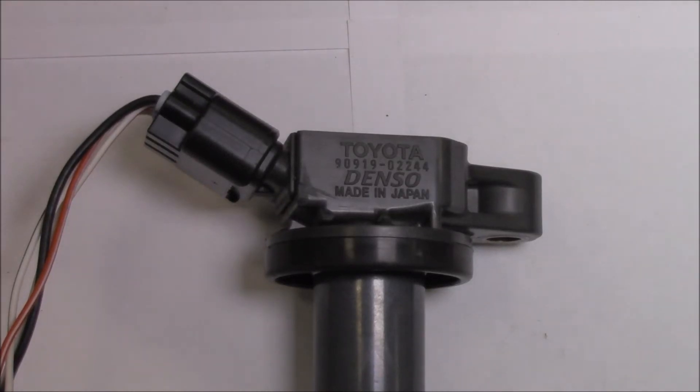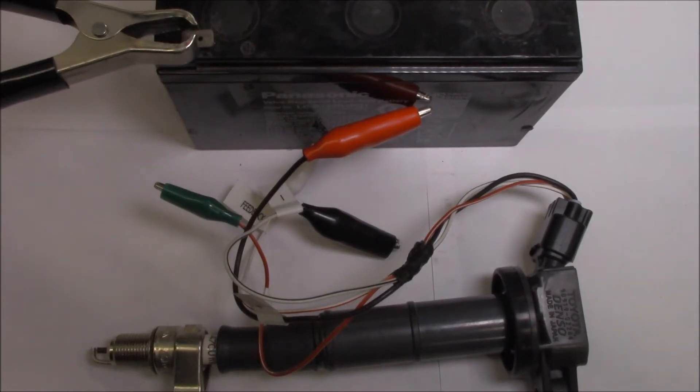We're now going to have a look at testing the Toyota Denso 4-wire coil-on-plug ignition coil. Just keep in mind that it's super important that you have the correct wiring diagram and you know which terminal belongs where.